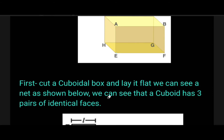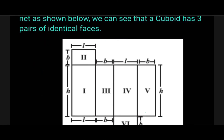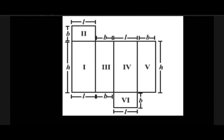We can see a net as shown below. We can see that a cuboid has three pairs of identical faces. If we cut it and spread it into a plane surface, the first and fourth faces are the same measurement. The third and fifth are the same measurement, and the second and sixth are the same measurement.